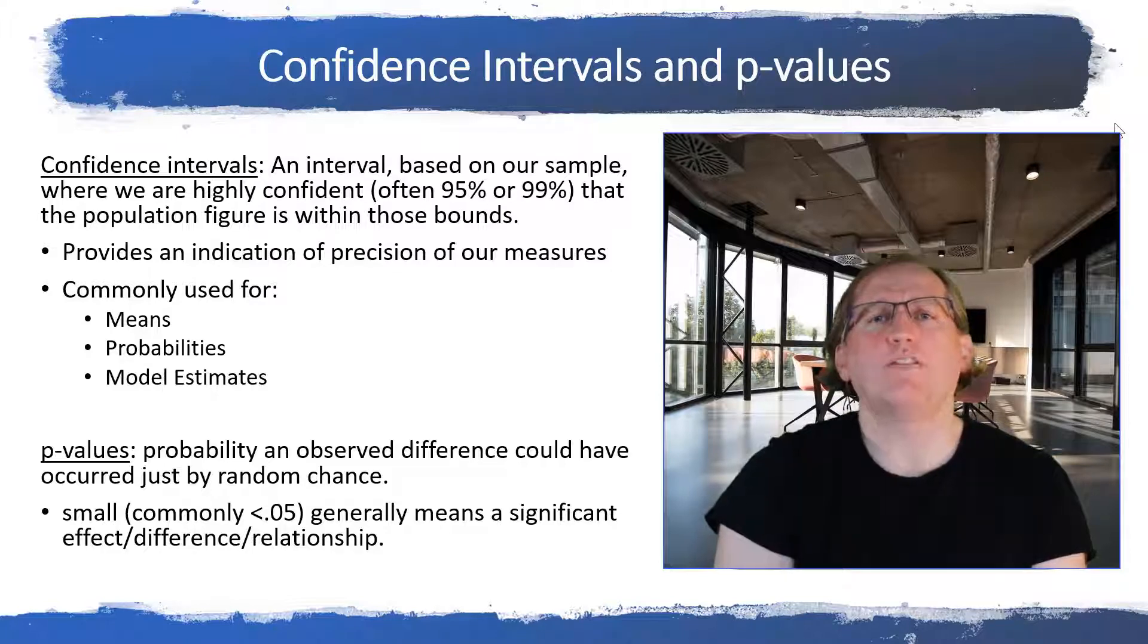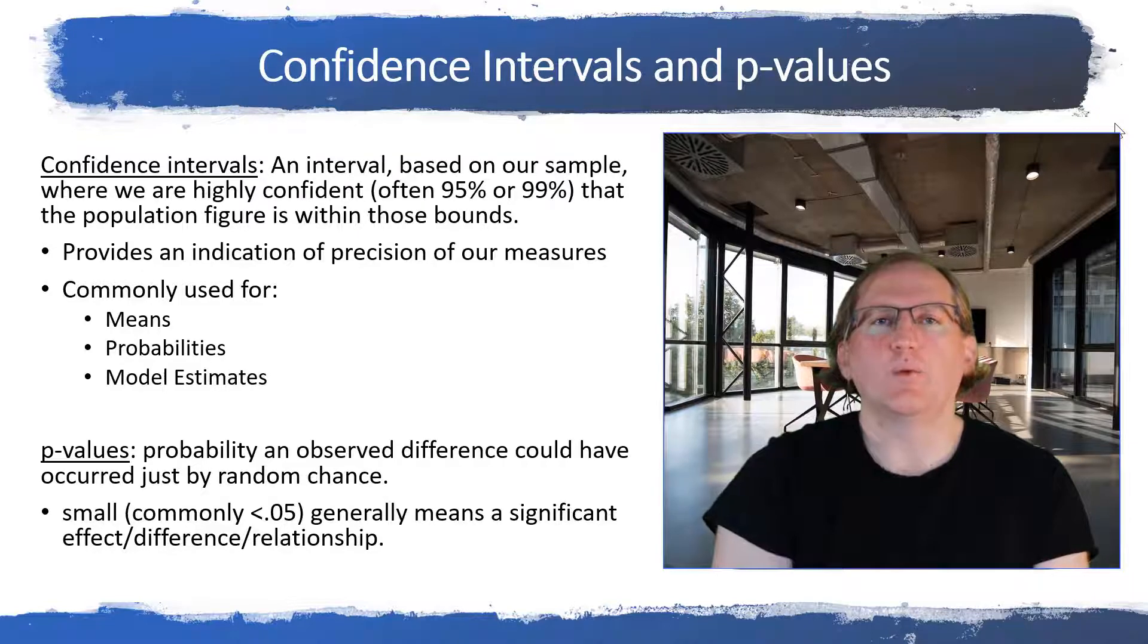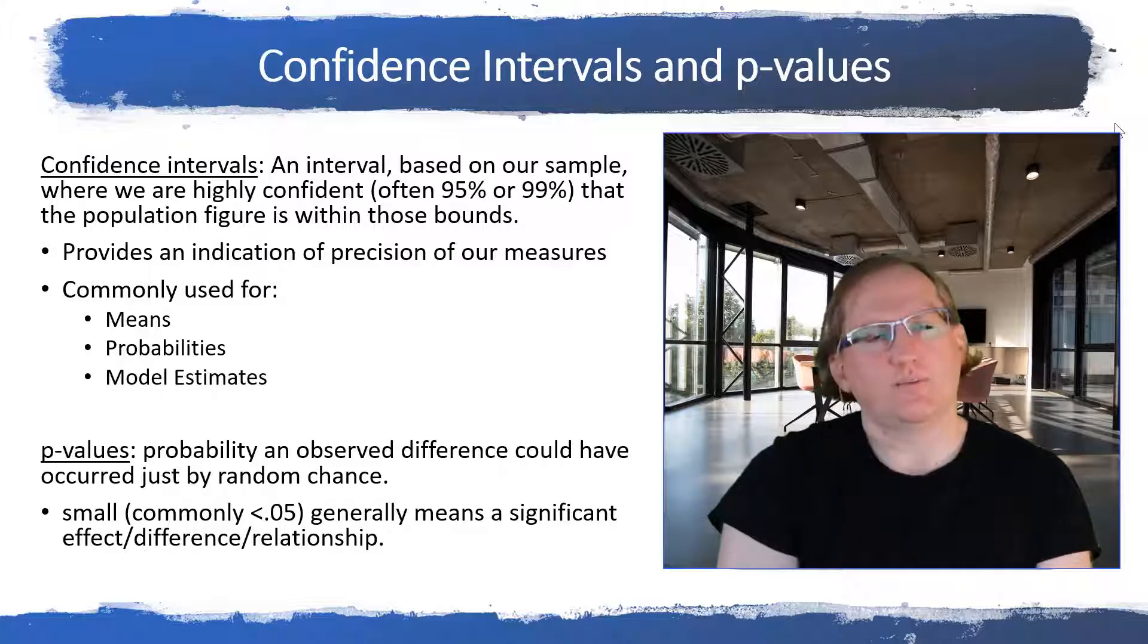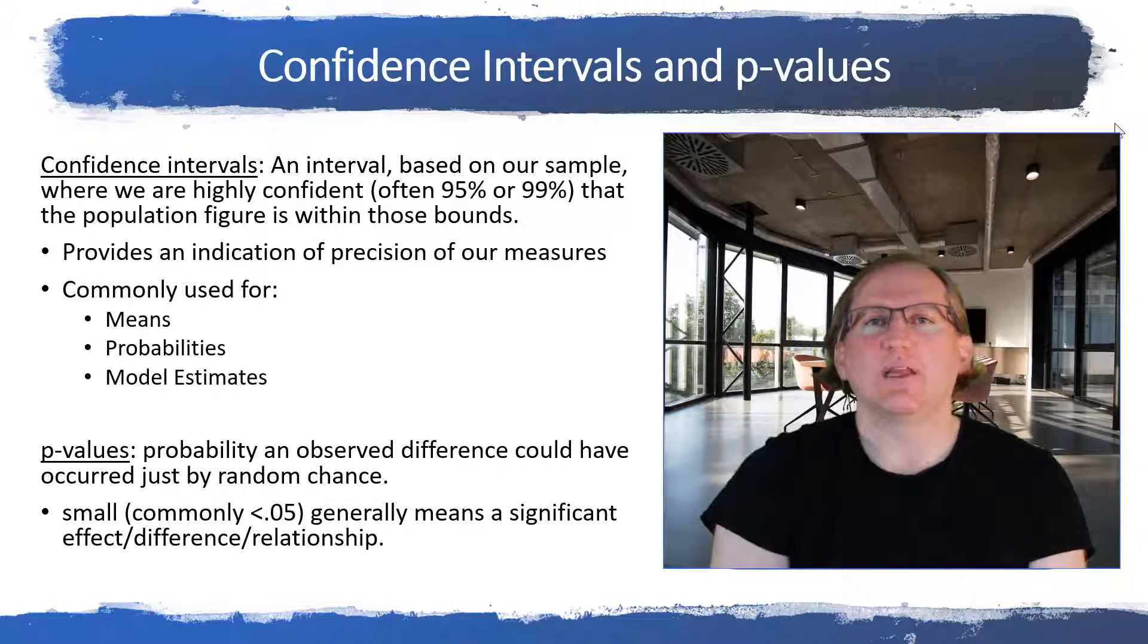The number that is often used as a benchmark is 0.05. But this can vary a little bit. And papers will often have little asterisks or other symbols that indicate what we call statistical significance. So do we think that this value or this effect or this difference is significant? Okay. So when we're looking at our papers, confidence intervals, p-values, we're going to see all the time. We need to get a little bit familiar with them. But really they're just telling me about precision and they're telling me about whether I think something happened by chance or it was actually a real effect or a real difference.